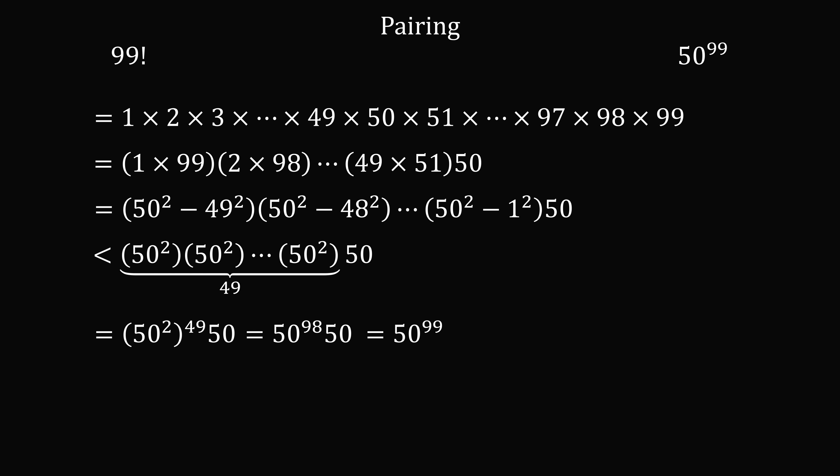And that's exactly what we want to prove. 99 factorial is less than 50 to the power of 99. That's one way to solve the problem.